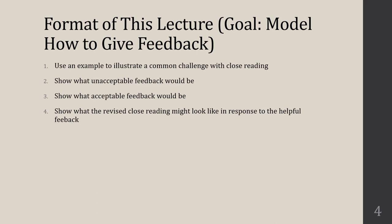Now that I've introduced you to three common mistakes — summarizing, giving only context, or giving only an opinion — I want to share a bit about the format of this lecture, which is organized according to those three errors. The goal of this lecture is to model for you how to give feedback on a close reading, because you will be doing this for your partner for Discussion Board number five. For each of those three categories, I'll give you an example of the mistake, show you what unacceptable feedback looks like in response, then show what acceptable feedback looks like, and also show what a revision would look like.